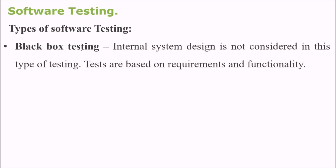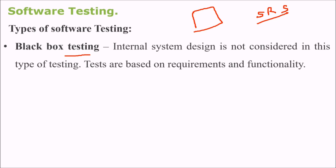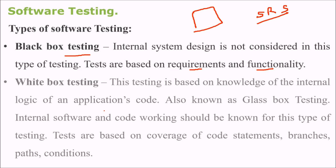We are looking at different types of software testing. First is black box testing. Black box testing means the system is a black box for us and we only want to check the functions, so this is also known as functional testing. This testing is purely based on requirements from the SRS — the software requirement specification — and the functionality.